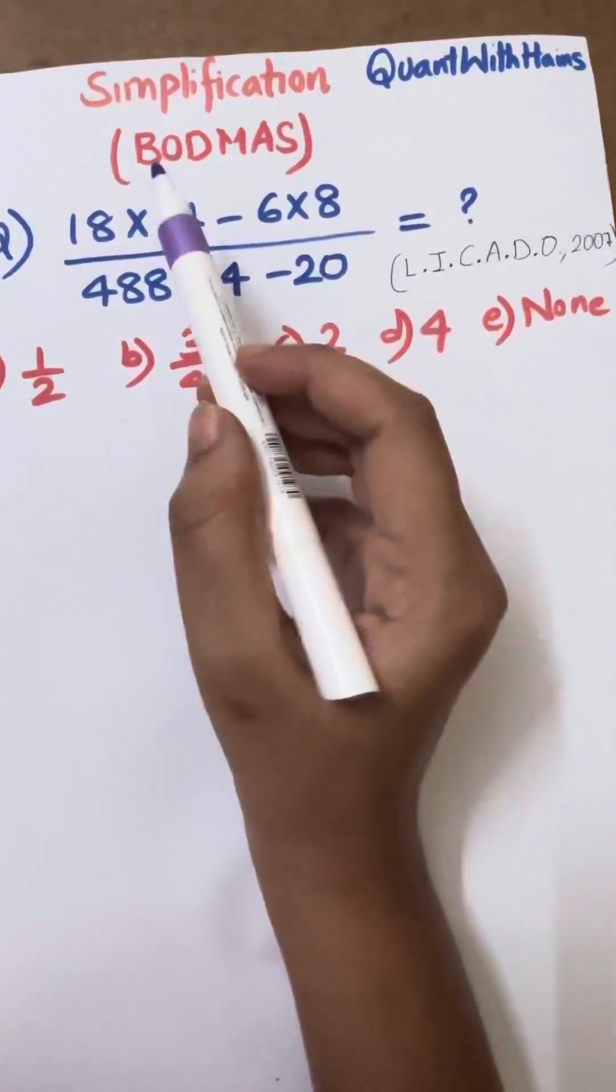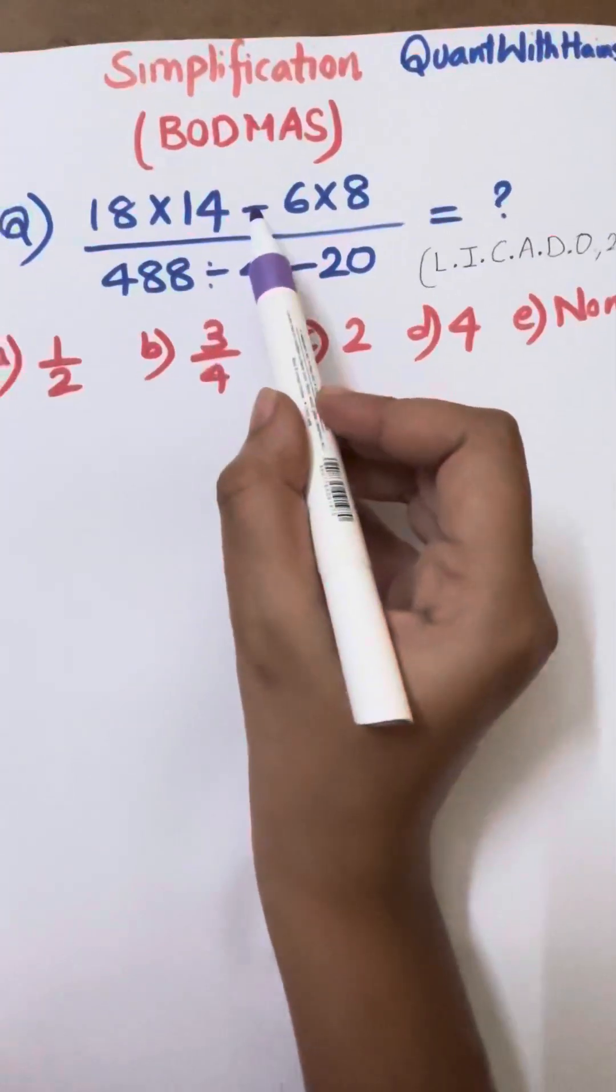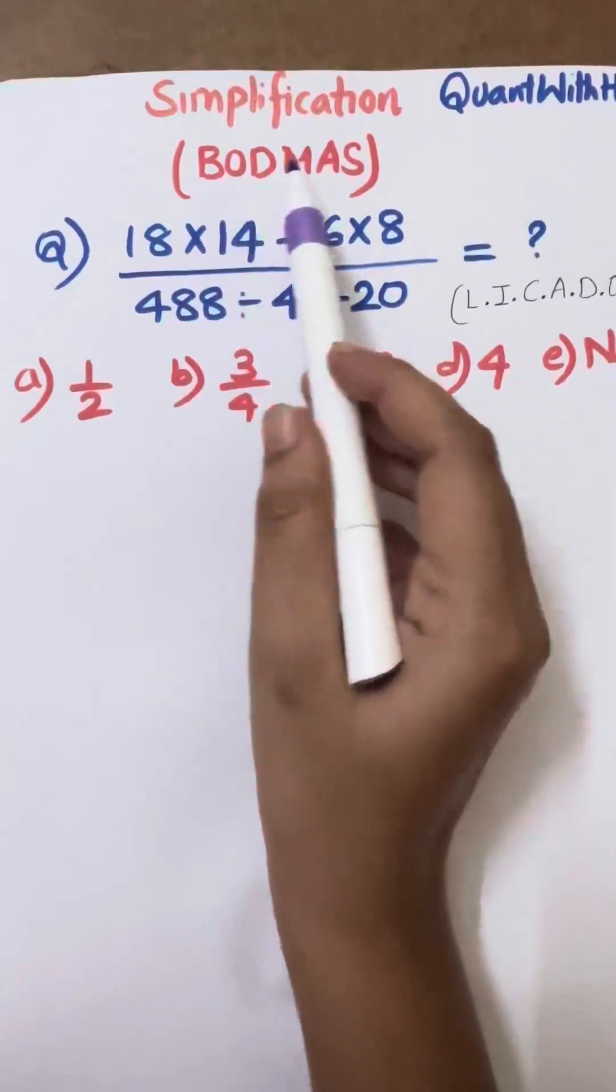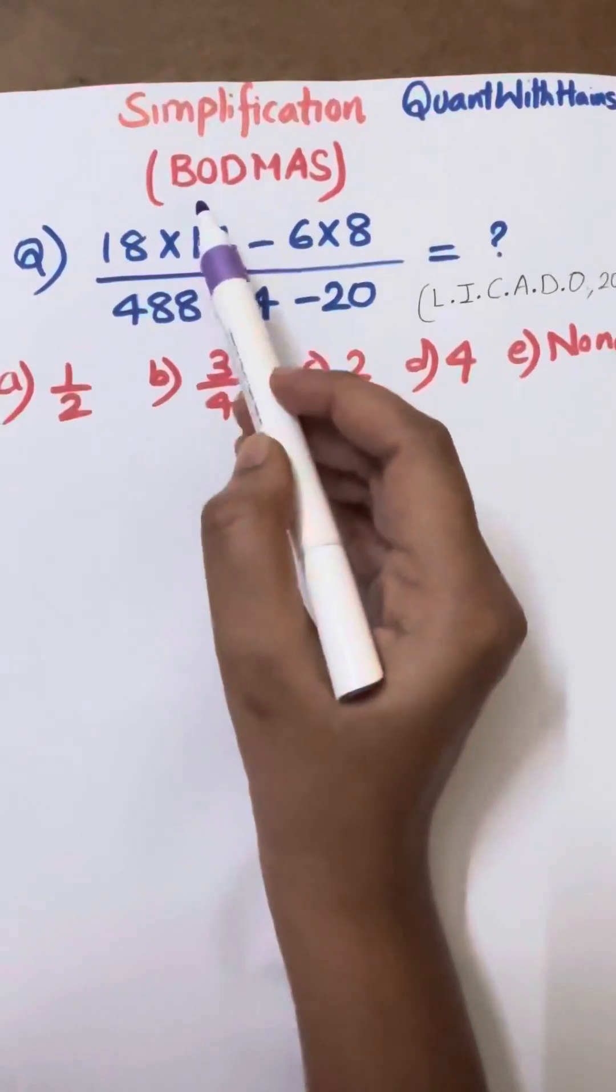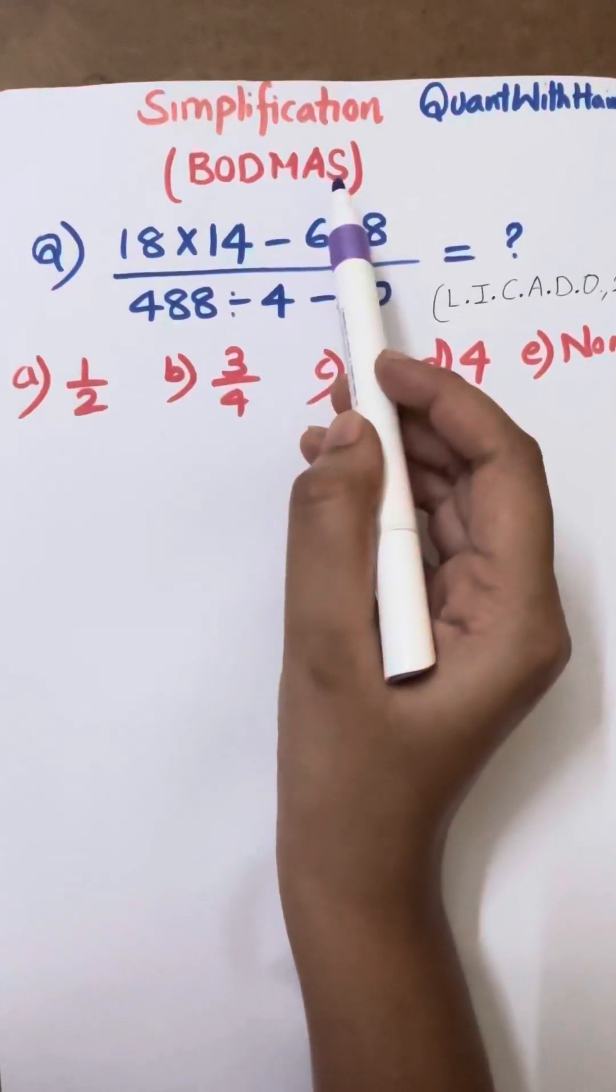In the numerator, if you look here, multiplication sign is there, subtraction sign is there. But in the BODMAS rule: division, multiplication, addition, subtraction. Division is not there, addition is not there, only multiplication and subtraction are there.